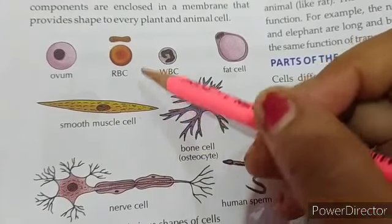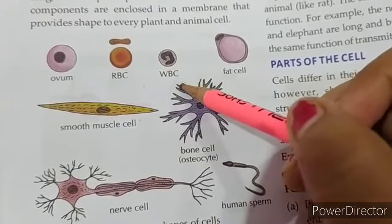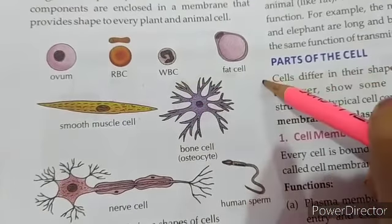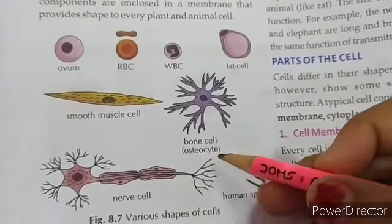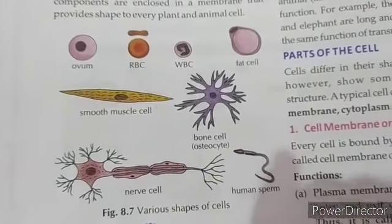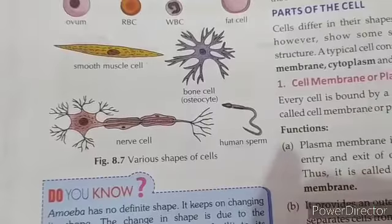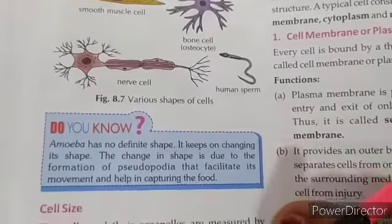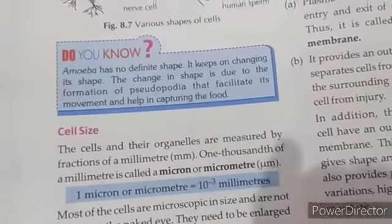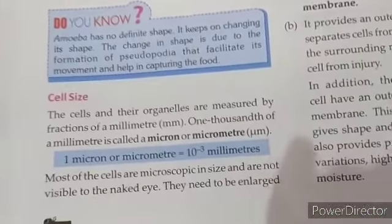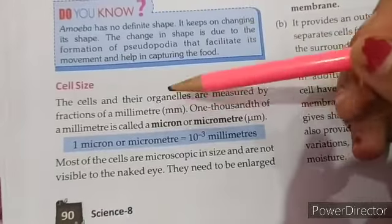This is the shape of RBC, this is the shape of WBC. Fat cell, smooth cell, or bone cell — and human sperm. Ye sabhi cells hain jinki alag-alag shape hai.